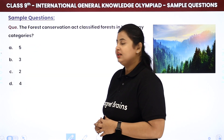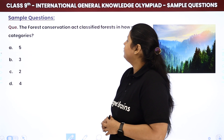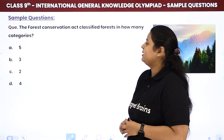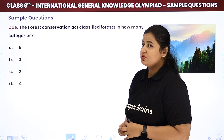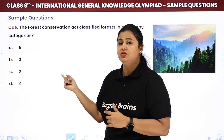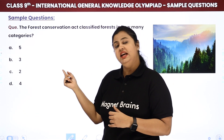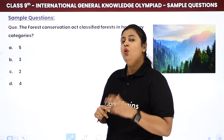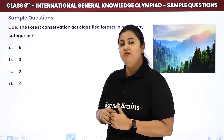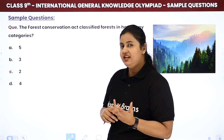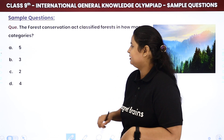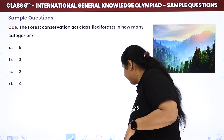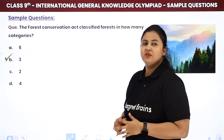Now we come to the fourth question: the Forest Conservation Act classified forests into how many categories? The Forest Conservation Act, which was enacted on the 25th October 1980, classified forests into three categories. The answer is three.